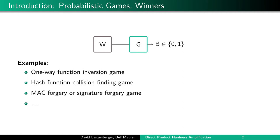We will not talk about very specific concrete kinds of games in this talk, but we will assume a certain kind of structure on the games. For the purpose of this talk, it may be useful to think of the games as, for example, the one-way function inversion game, the hash function collision finding game, or the MAC forgery or signature forgery game for a certain MAC or signature scheme.